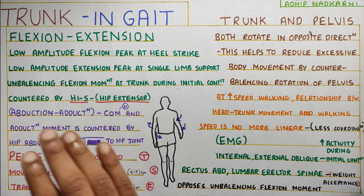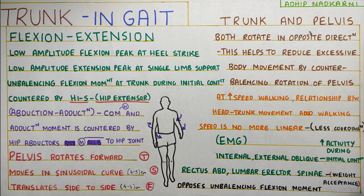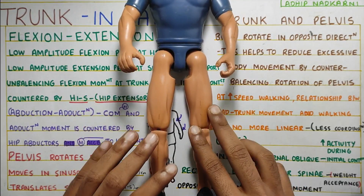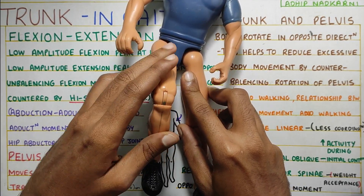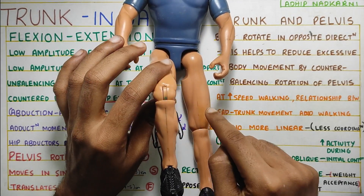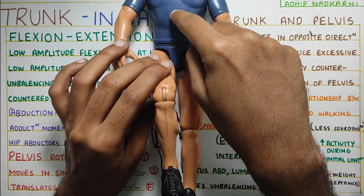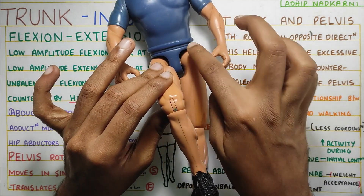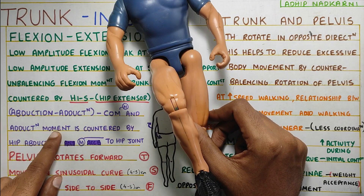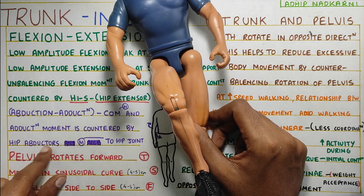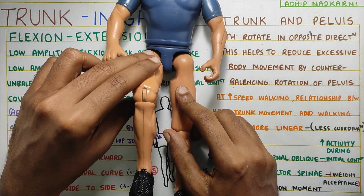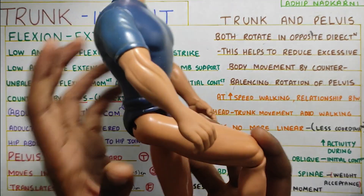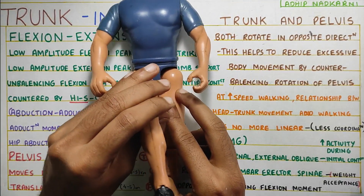Apart from this, there is also abduction and adduction, which relates to your center of mass. When one foot is in non-weight bearing and the other is weight bearing, your center of mass is pulled downward by gravity, causing adduction at the hip joint. This adduction movement is countered by your hip abductors. So the trunk movement here is happening in the frontal plane — that is the second movement seen. The first was in the sagittal plane, and then in the frontal plane.